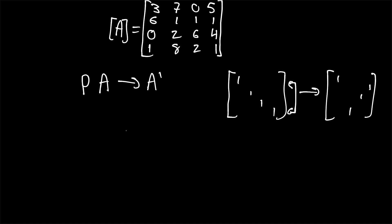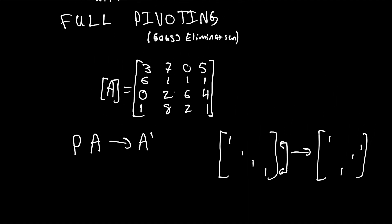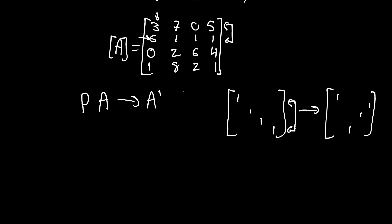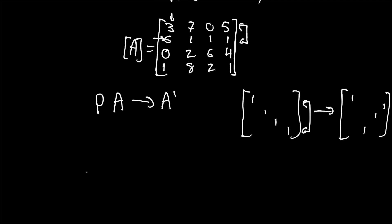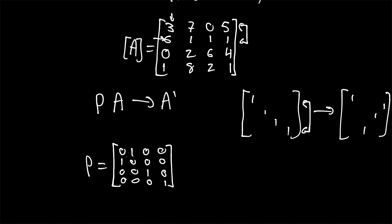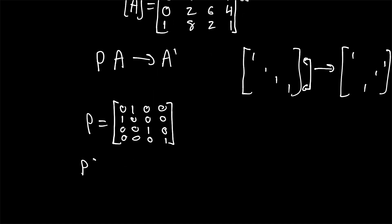In the Gauss elimination method with full pivoting, we want to make sure that the matrix row we're currently working on has the largest number in its first element. For this example, our first row has four elements, and the first element can either be a 3, a 6, a 0, or a 1. The 6 is going to be the largest possible entry for that row, so we're going to swap these two rows as our first operation. The pivot matrix for that is simply the identity matrix with the first two rows swapped.